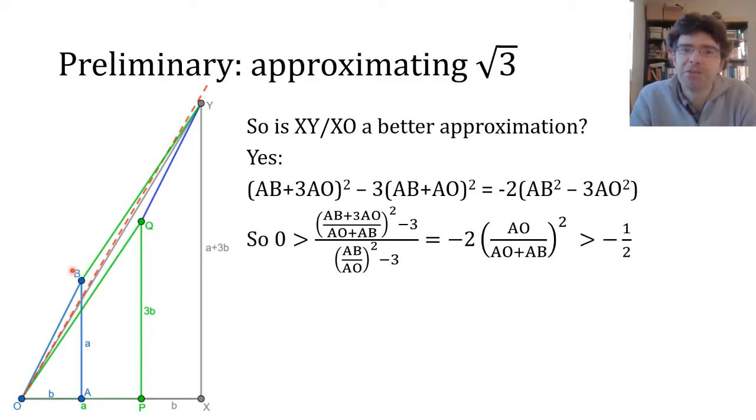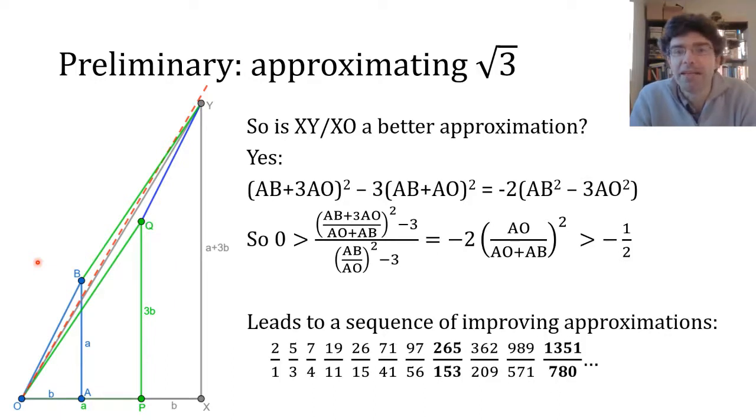So this series of approximations does in fact get better and better, and when we repeat the process what we get is a sequence which includes both of the approximations that Archimedes used, which is unlikely to be a coincidence though the exact way that he derived the sequence isn't clear. You might like to try adapting this method to get series of approximations to other things like square root of 2 or square root of 5.